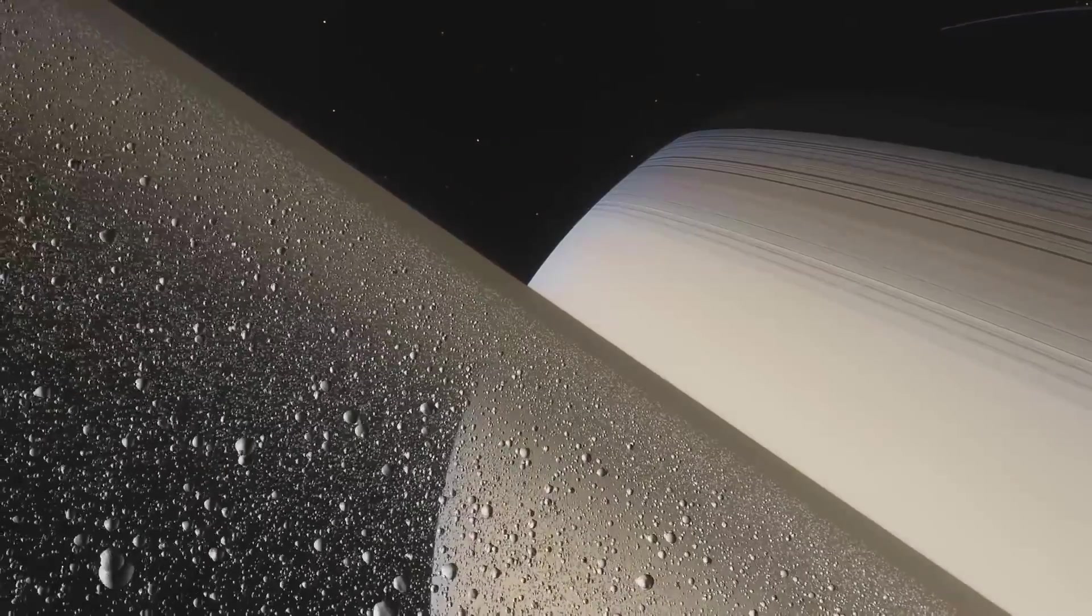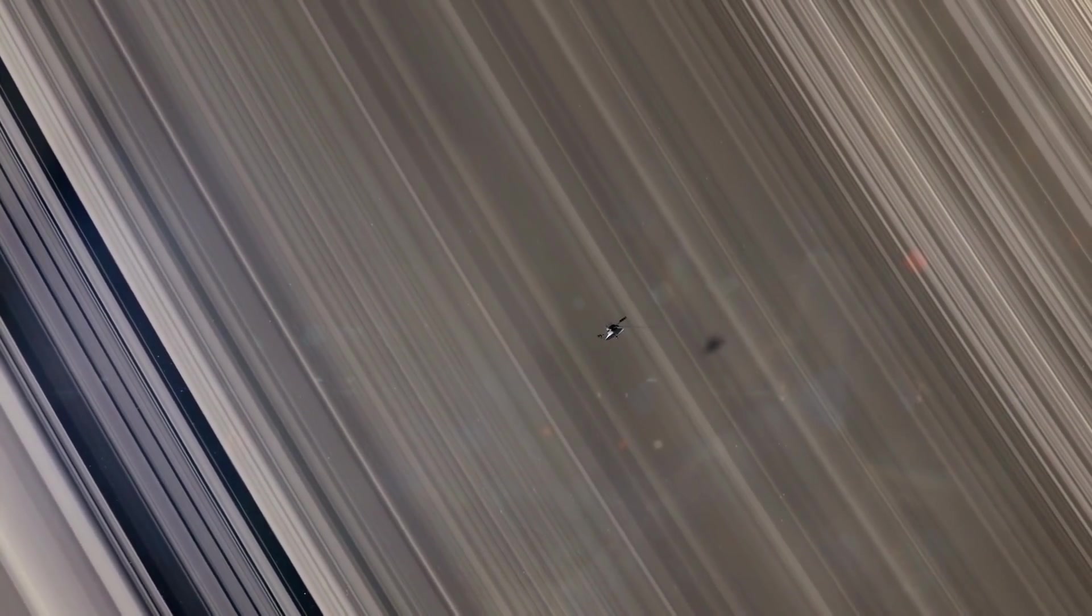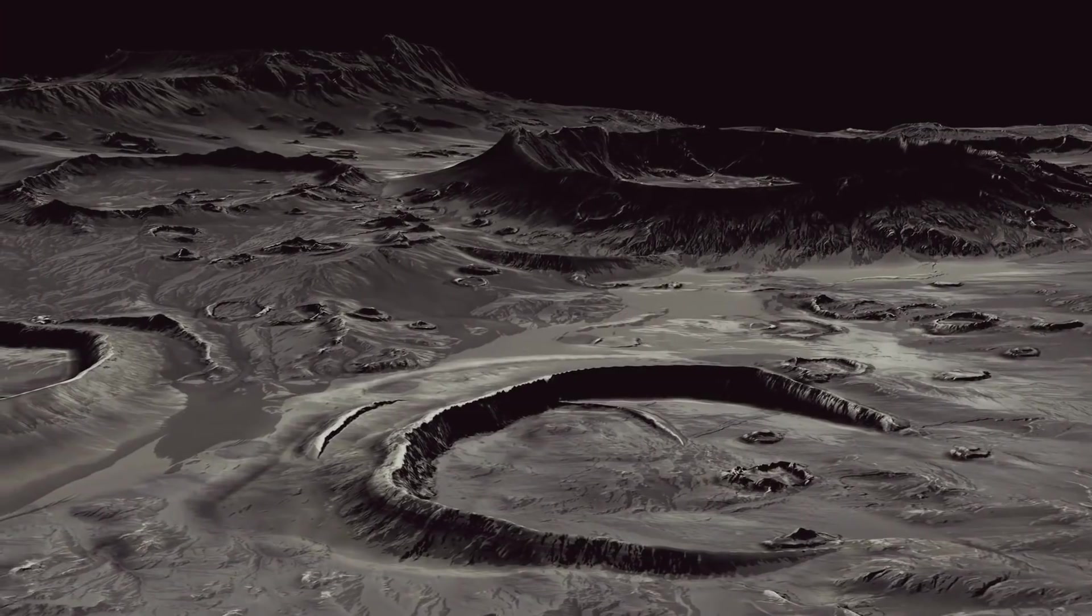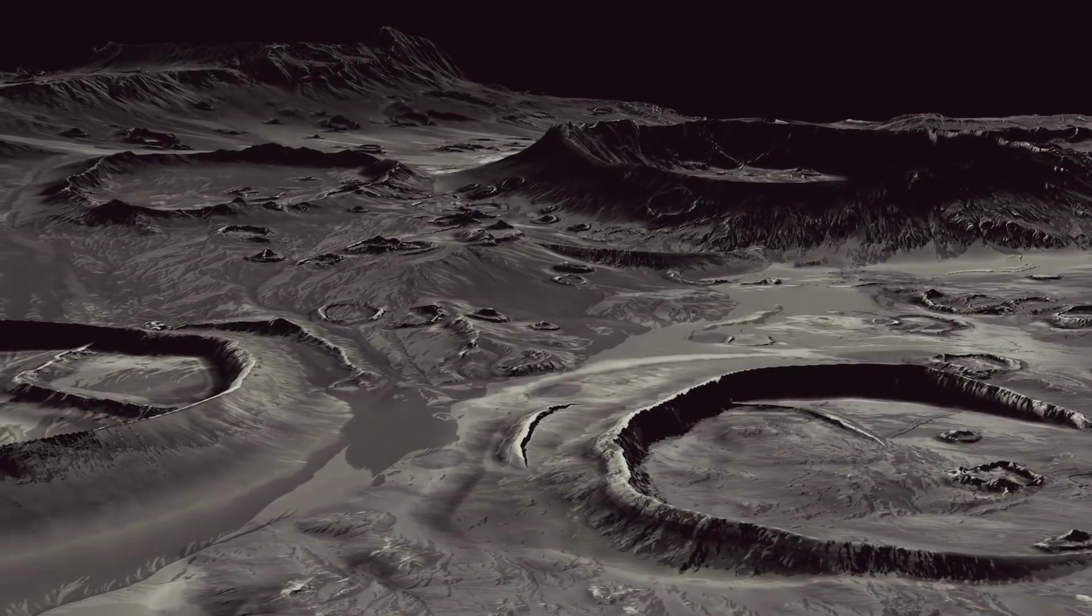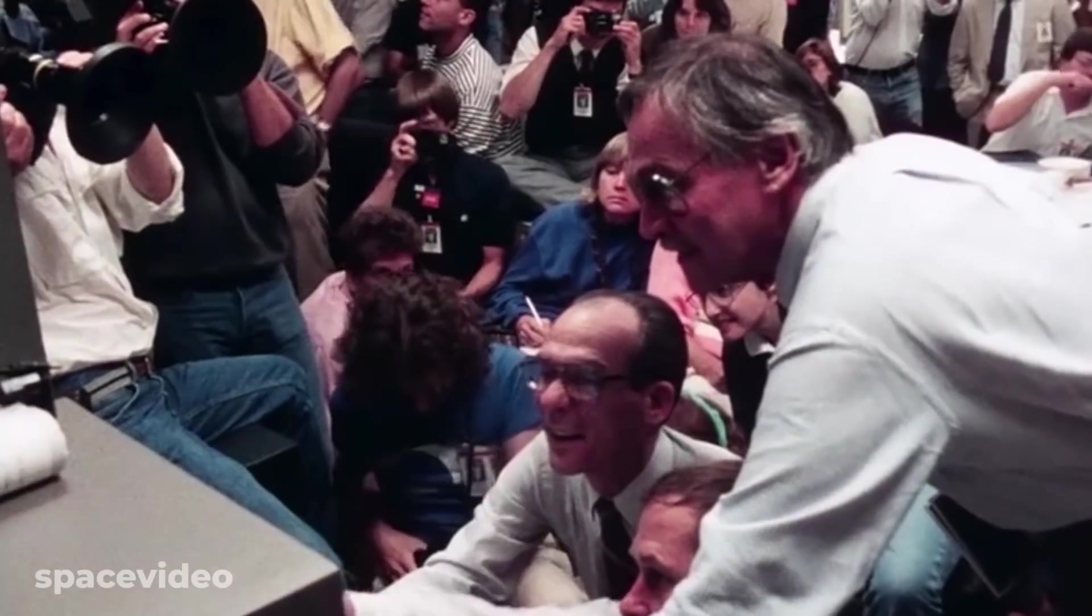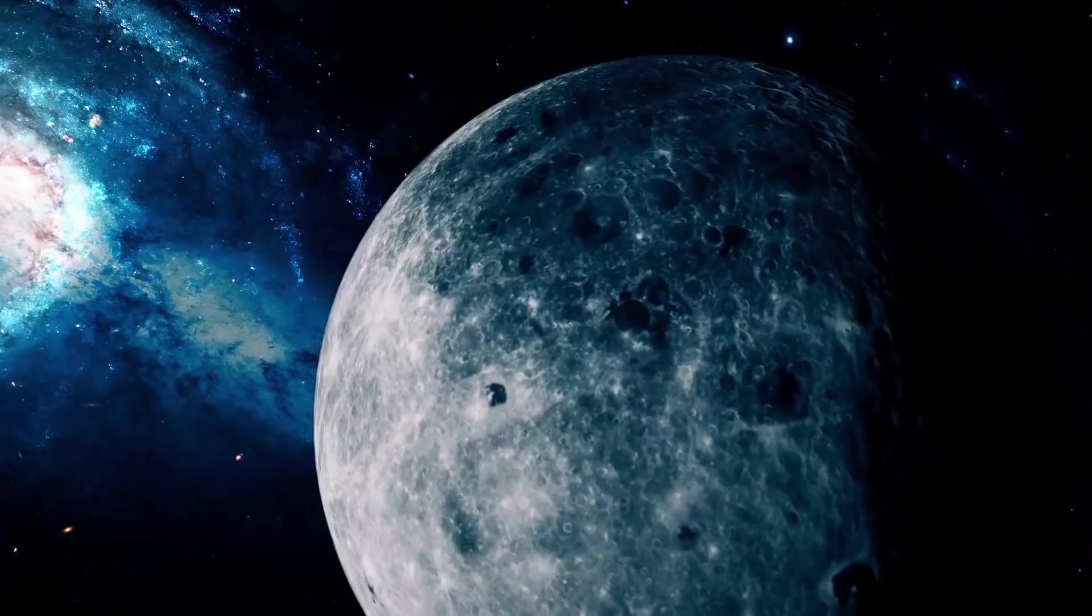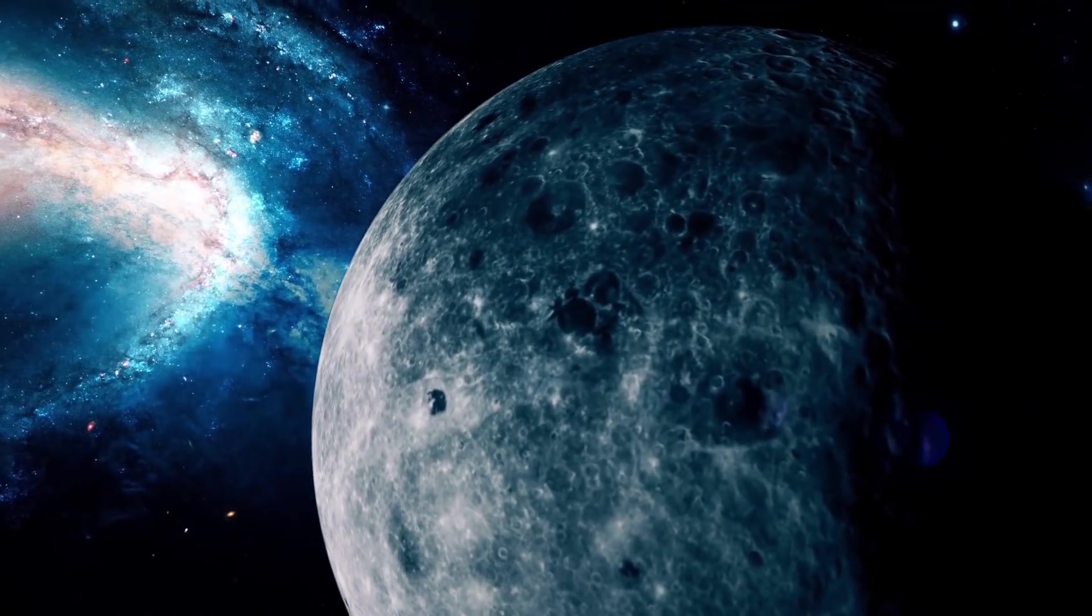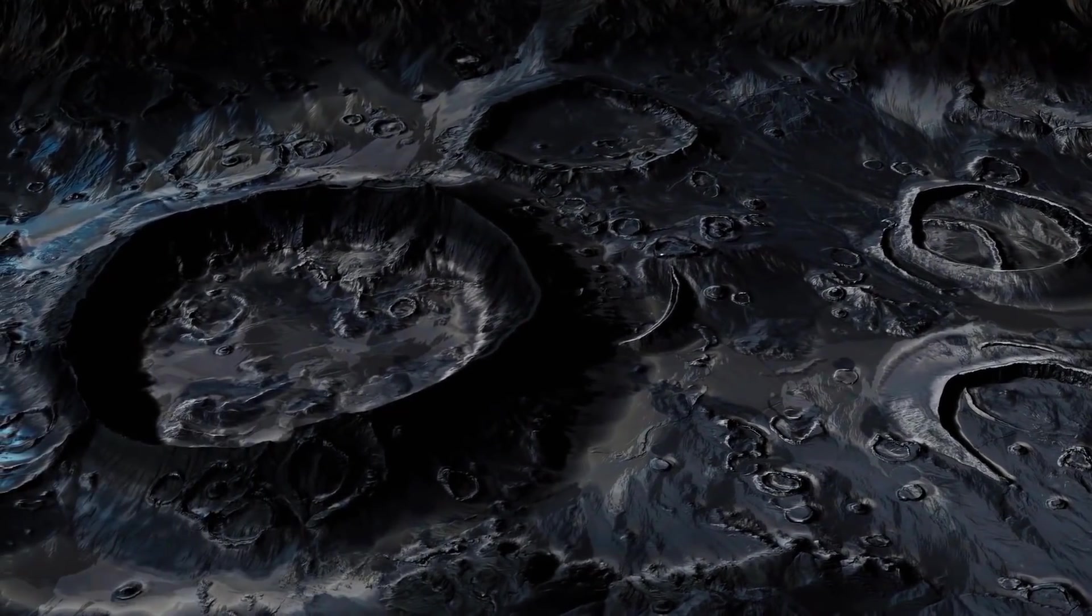But that's not all, there is more. Saturn's G-rings were also detected by Voyager 1. The exploration of Saturn and its moons had a huge impact on scientists all over the world and especially those at NASA. It taught them that all moons are unique, special, and worthy of study.